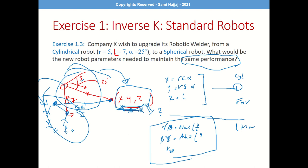This is called the conversion equation. We could also have written it in reverse — starting with a spherical robot and converting to cylindrical. The procedure is very similar: go forward once in one robot to find the end-effector position, then go inverse in the second robot to find its parameters. This approach works for any robot type, not just spherical and cylindrical.